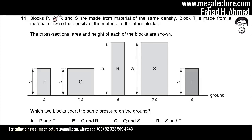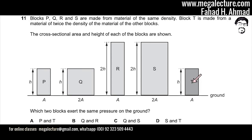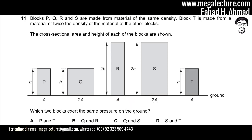The question states that blocks P, Q, R, and S are made from a material of the same density, so mass over volume is exactly the same for all four. Block T is made from a material of twice the density of the other blocks. The cross-sectional area and height of each block are shown. The question asks which two blocks exert the same pressure on the ground.